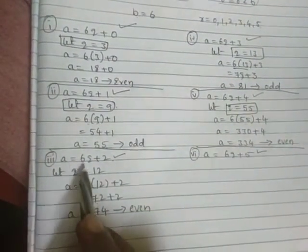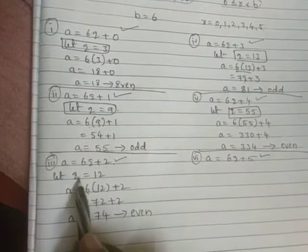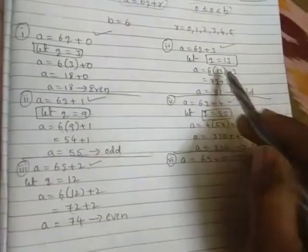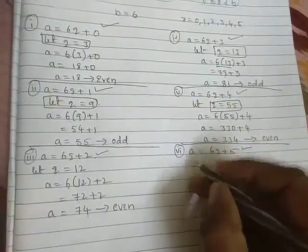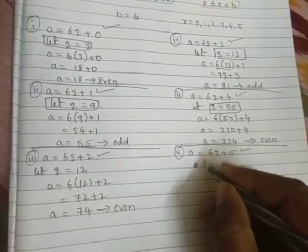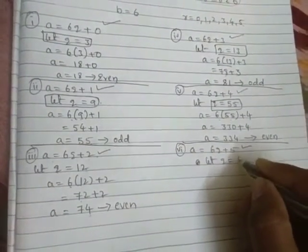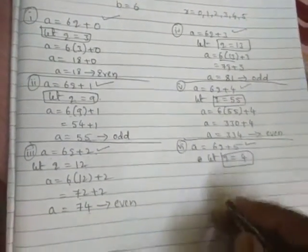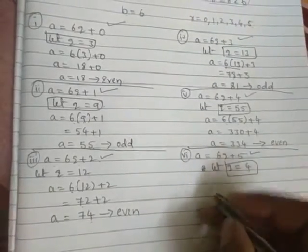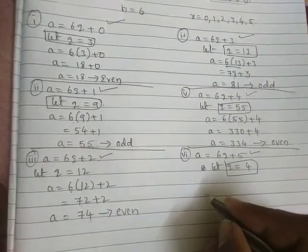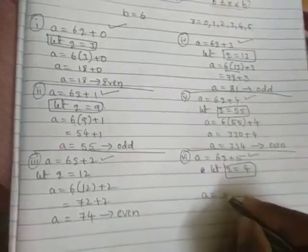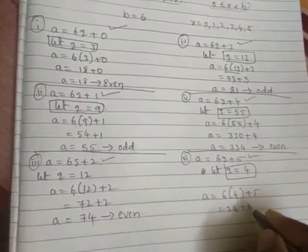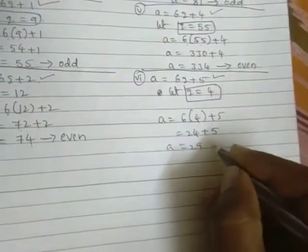See a = 6q+2. In the place of q I substituted 12, you got 74, same like that I did. So now 6q+5, I'll substitute q = 4, random number taken, but only take positive integers, otherwise total number will come negative. a = 6(4) + 5, six fours are 24 plus 5, 29.